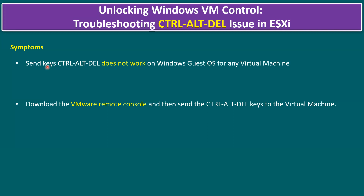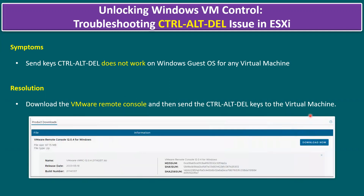In that scenario, the workaround solution is to download the VMware Remote Console (VMRC). This software is available from the VMware website. You can use the remote console option to send the Ctrl+Alt+Delete keys to the virtual machine. The current latest version is 12.0.4 for Windows. You can download and install this tool to resolve the unable-to-send-Ctrl+Alt+Delete issue on Windows virtual machines.